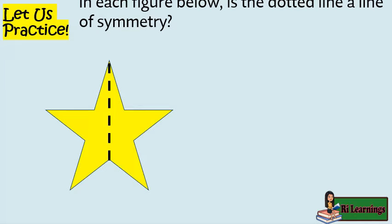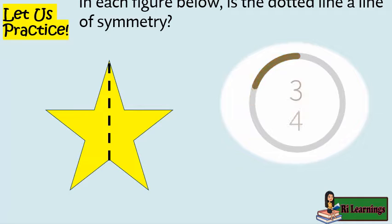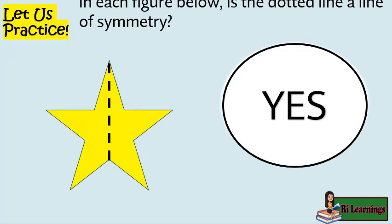How about this yellow star? Is the dotted line a line of symmetry? I will give you 10 seconds to answer, and the timer starts now. And the answer is yes, it is a line of symmetry.